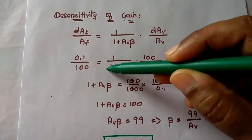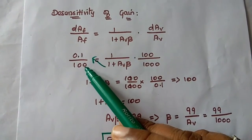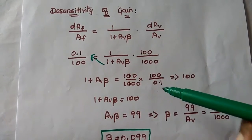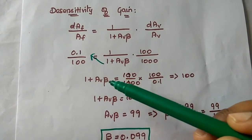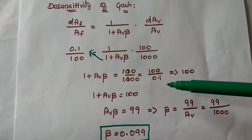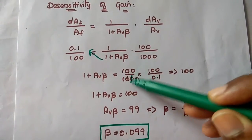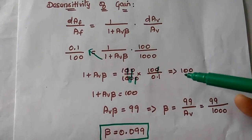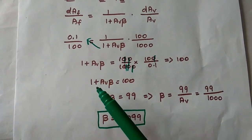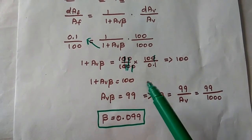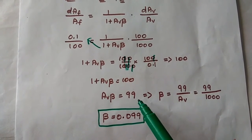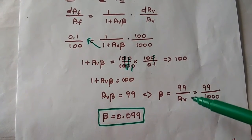Rearranging, 1 + AV·β = (100/1000) × (100/0.1) = 100. So AV·β = 99, giving β = 99/AV.